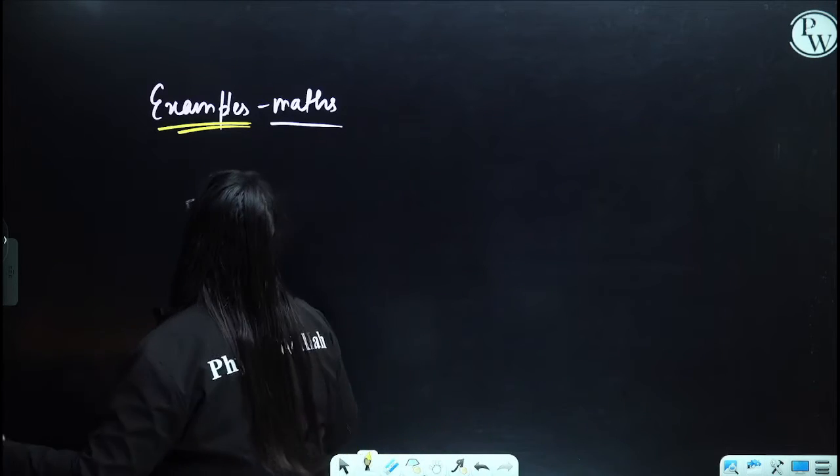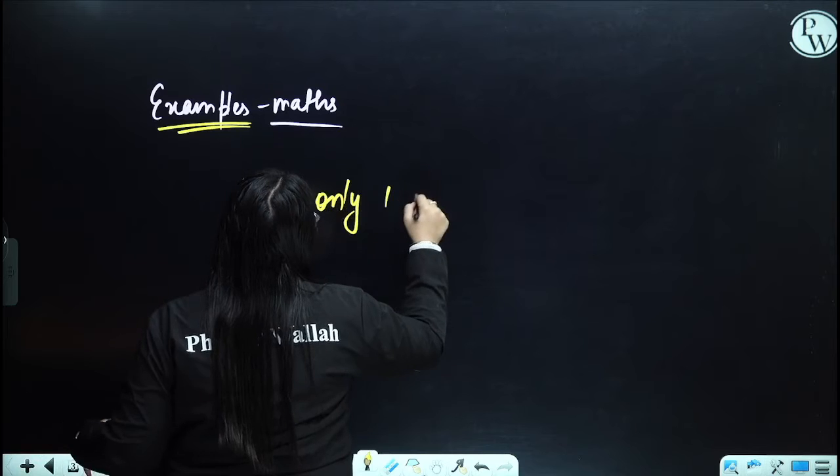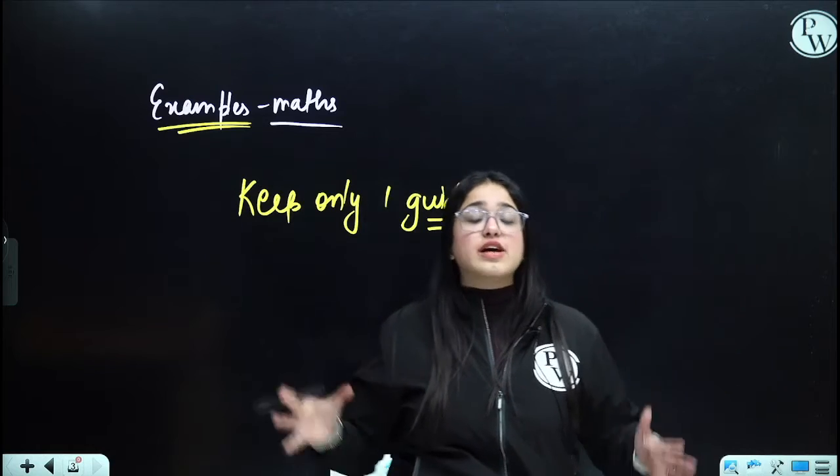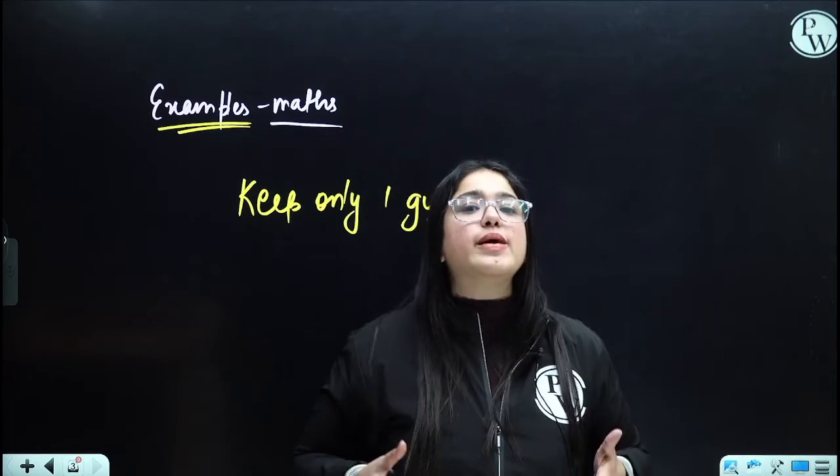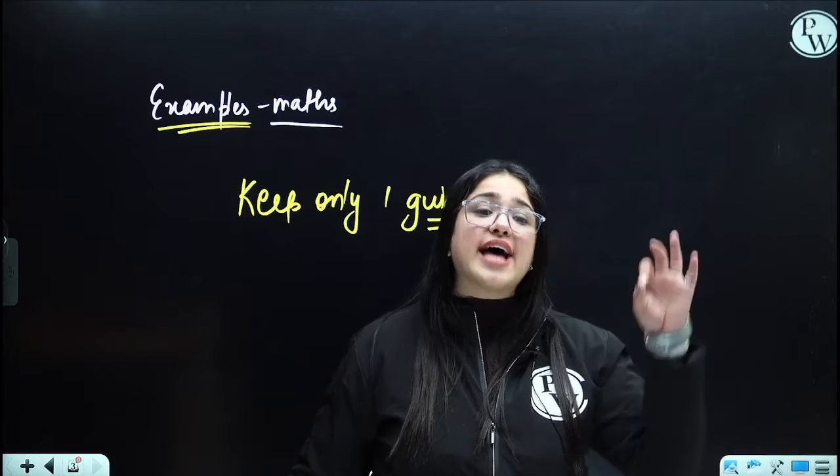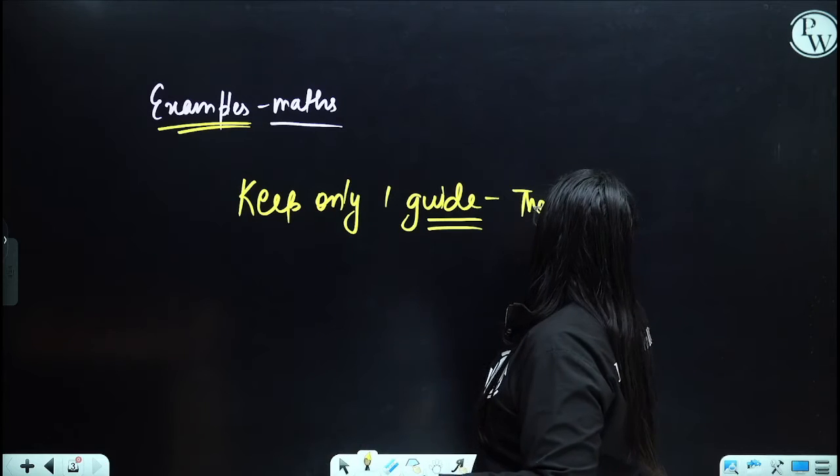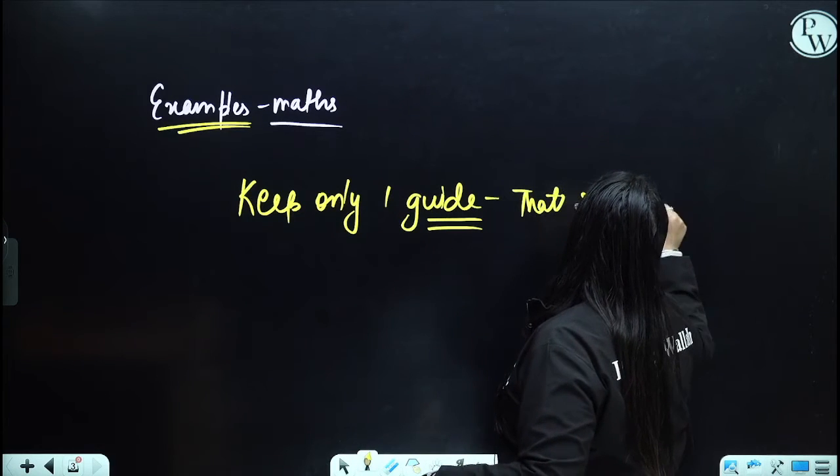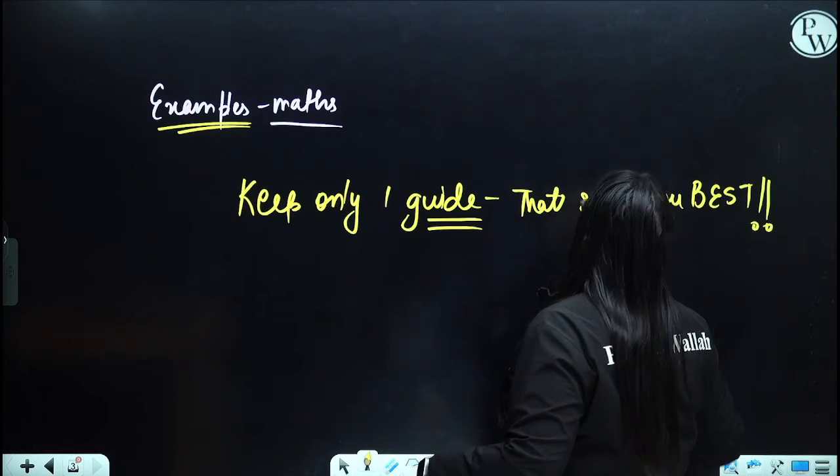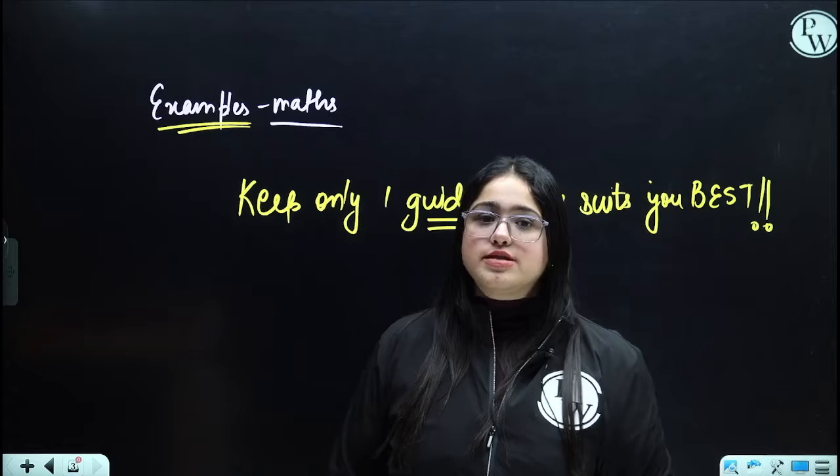So, in that case, students, one thing that you all should keep in your mind is, keep only one guide. That guide could be the question bank, that could be any guide in which you feel the language is easy for me to learn, to study only from that one guide itself. You need not have five or six guides with you because in that way, you're going to get really confused. So, keep only one guide that suits you best. That you feel like this is the best for me.